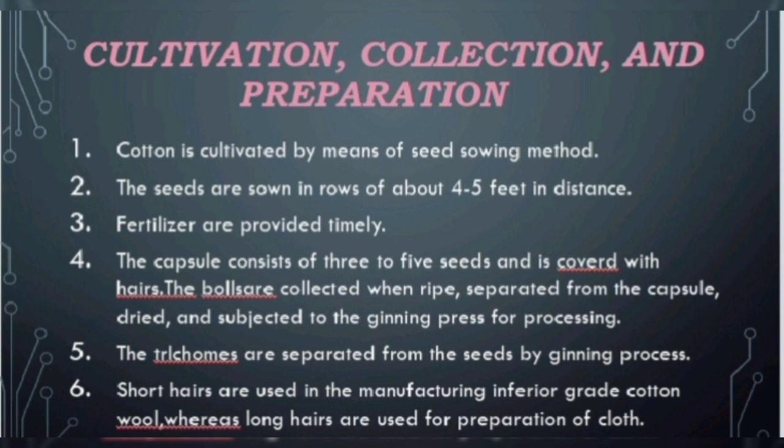Then cultivation, collection and preparation of cotton. Cotton is cultivated by means of seed sowing method. The seeds are sown in rows of about four to five feet in distance, and fertilizers are provided timely. The capsule consists of three to five seeds and is covered with hair. The balls are collected when ripe, separated from the capsule, dried, and subjected to the ginning press for processing. The trichomes are separated from the seeds by the ginning process. Short hairs are used in manufacturing inferior grade cotton wool, whereas long hairs are used for the preparation of cloth.